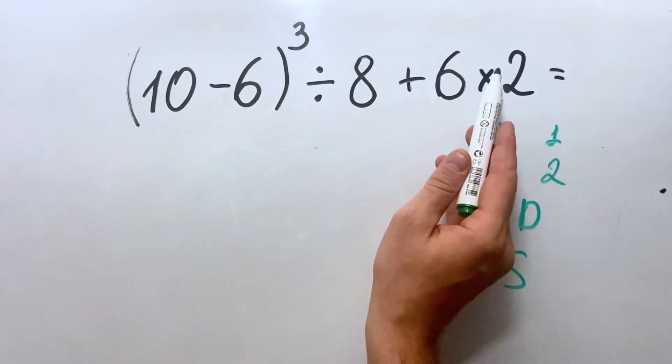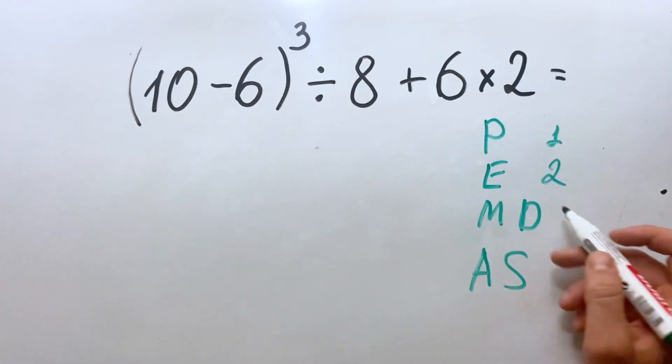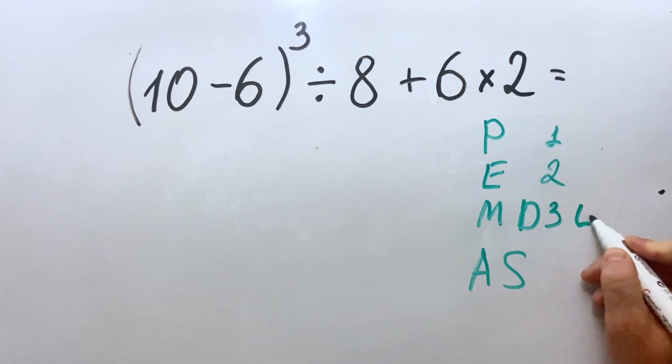We can see that we have here multiplication and division, and this type of operation should be done from left to right. So in this case it should be done in the third place and should be done from left to right.